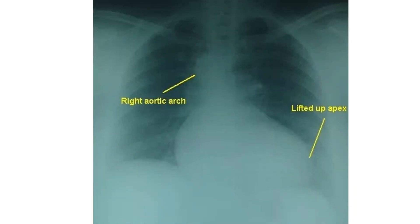The lifted-up apex, coeur en sabot — peasant's boot shaped heart — due to right ventricular hypertrophy is seen well in this chest X-ray PA view. The right-sided aortic arch is seen indenting the tracheal air column on the right side. There is mild cardiomegaly and right atrial enlargement in this adult person with Tetralogy of Fallot and associated inferior wall myocardial infarction. The lung fields are oligemic due to right ventricular outflow tract obstruction in Tetralogy of Fallot.